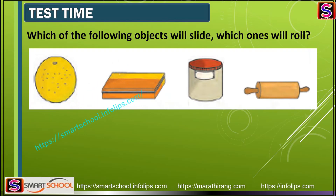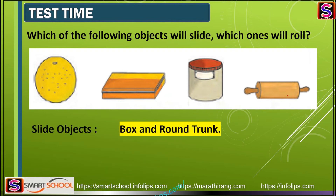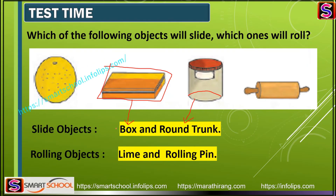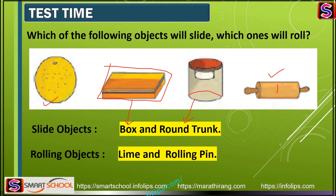Next question: which of the following objects will slide? A lemon, a box, a trunk, and a rolling pin. Objects with only a flat surface will slide - so the box and the trunk will slide since their bottom is flat. Objects with a curved surface will roll - the lemon and the rolling pin will roll because their curved surface touches another surface.